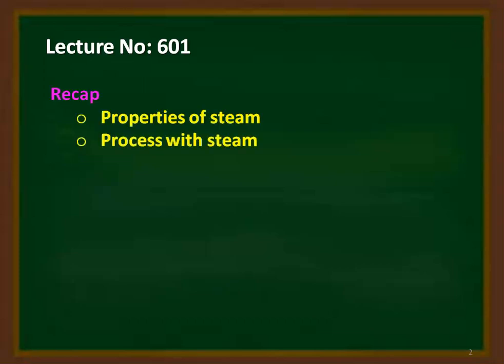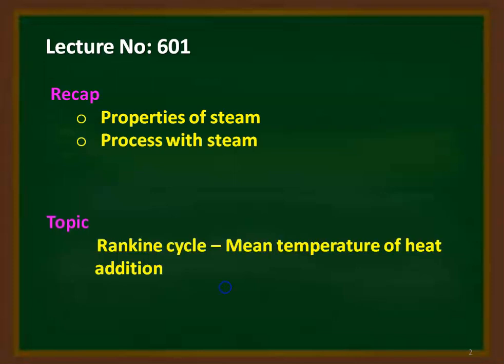We recap from the previous lecture series on the properties of steam and the processes with steam. In module 5, we discussed about the properties of steam, formation of steam, and the processes with steam. And in this lecture, we are going to discuss about the Rankine cycle. We are going to derive the efficiency of the Rankine cycle and we will discuss the mean temperature of heat addition.